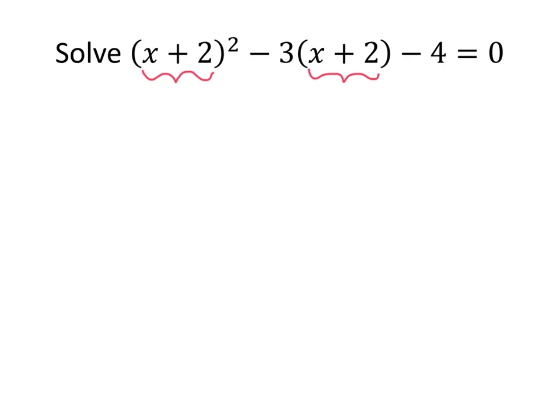So the trick is to let u—I'm going to invent a new variable that I'm going to call u—and I'm going to let that equal x plus 2. So that means that I can rewrite this equation as u squared minus 3u minus 4 equals 0. And hopefully you agree that that's a much nicer looking equation.